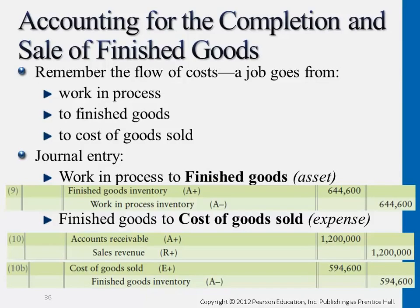So this is the first entry: finished goods inventory. You can understand it the same as the inventory category you learned in financial accounting. But at that time we were just talking about merchandising companies, and when we purchase inventory we just directly debit inventory and credit accounts payable. So this finished goods — the reason why we have 'finished goods' in front of it is because we have many different types of inventory. But really, the finished goods inventory is the part that is ready for sale, just like the inventory term you learned in financial accounting.